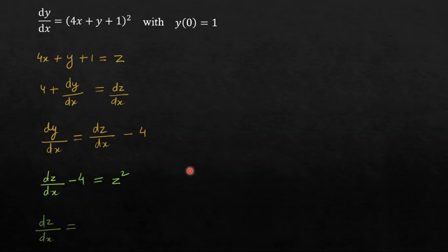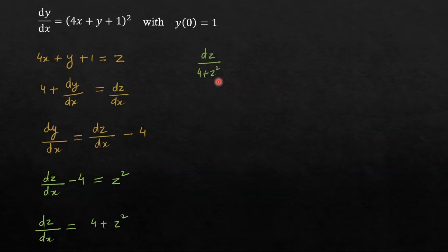So now I can write dz by dx is equal to 4 plus z square. Now let us make this equation into variable separation form. So I can write dz by (4 plus z square) is equal to dx. So I have separated the variables.